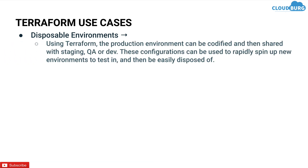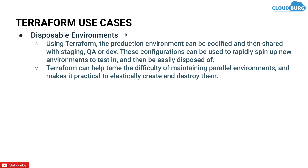Next use case is disposable environments. Using Terraform, the production environment can be codified and then shared with staging, QA, or dev environments. These configurations can be used to rapidly spin up new environments for testing and then easily disposed of. Terraform helps tame the difficulty of maintaining parallel environments and makes it practical to elastically create and destroy them — you can use the same code and launch other environments in just a few minutes.